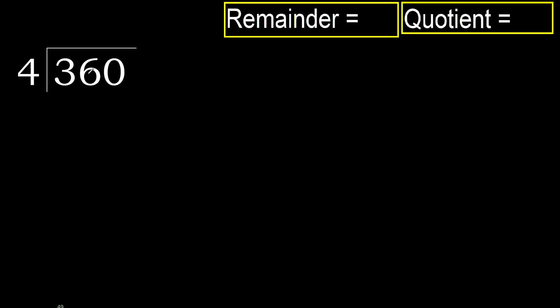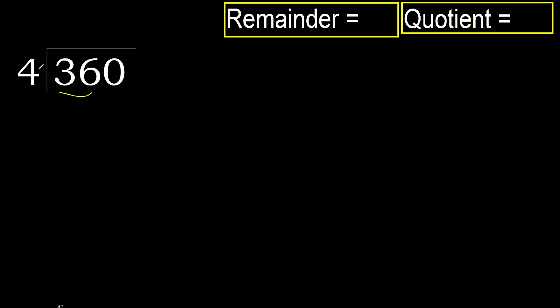360 divided by 4. 3 is less, therefore next. 36 is not less, therefore with 36.